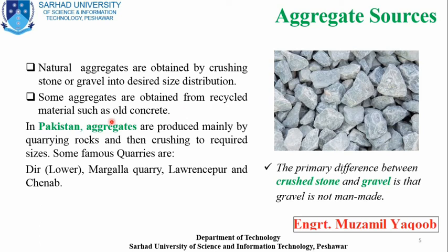In Pakistan, aggregates are produced mainly by quarries — quarrying rock and then crushing to required sizes. Some of the famous quarries are Dir, which is part of Khyber Pakhtunkhwa (Lower Dir specifically), Margalla quarries located in Islamabad, Larnaspur which is about 80 to 90 kilometers from Islamabad, and Chenab as well. These famous quarries produce both fine aggregates and coarse aggregates, fulfilling the requirements of Pakistan's construction industry.